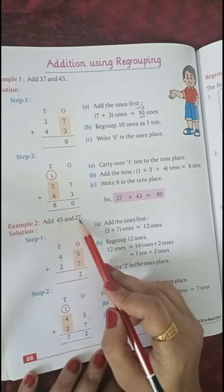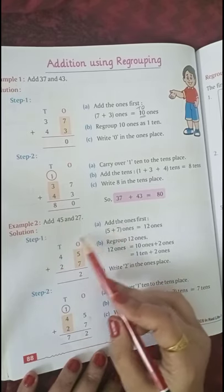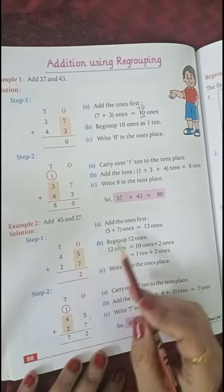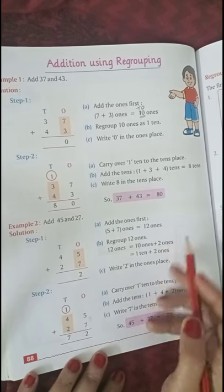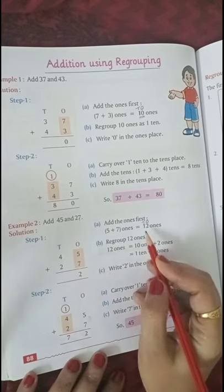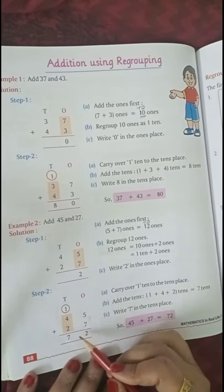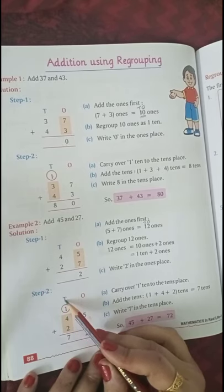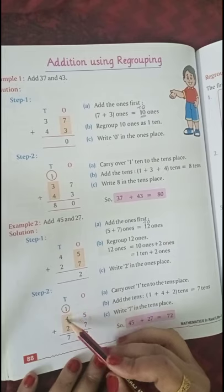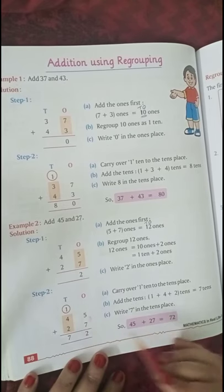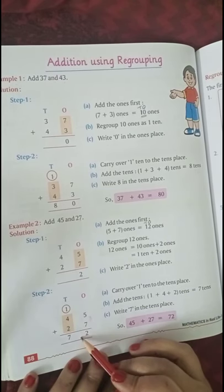Add 45 and 27. This is example 2. As usual, we have to first do ones. 5 plus 7 ones equals 12 ones. 1 ten, 2 ones. 2 will come here and carry 1 will go up. Now we add all 3 numbers of tens. 1 plus 4 is 5, 5 plus 2 is 7. So 45 plus 27 equals 72. Okay?